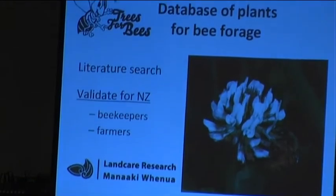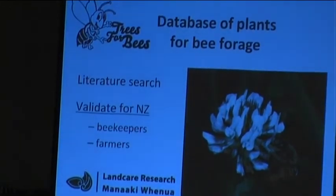Our database is based on an international literature search. We're collecting information on all of the good bee plants that there are worldwide, and then we have it hooked up to a research database and a plant names database to find out if that plant is in New Zealand. We're using both international and New Zealand literature, but what you find in the literature is not necessarily true. There's an awful lot of information in farmers' and beekeepers' heads that is not in the literature.